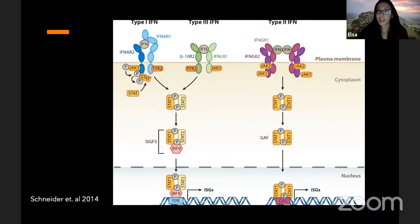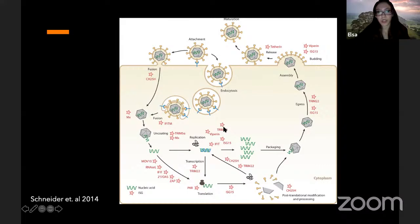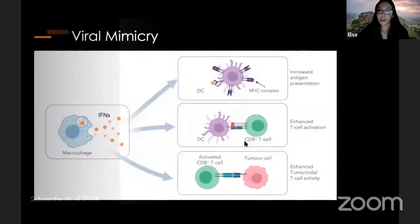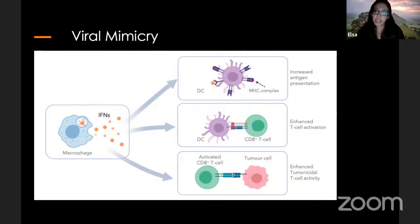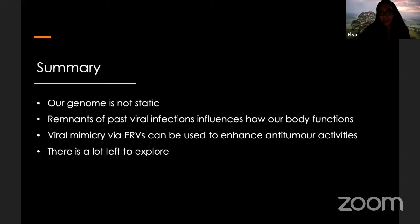ISGs are highly specialized to target viral infection at every stage — penetration, uncoating, maturation, endocytosis, and attachment. The red stars in the diagram indicate those ISGs which prevent each step from happening. These viral proteins are also able to ramp up our immune system, causing it to be better at recognizing cancerous cells and thereby promoting their destruction — an effect referred to as viral mimicry. Overall, the main points are that our genome is not static, remnants of past viral infections still influence the way our body functions, viral mimicry can be used to enhance anti-tumor activities, and frankly, there is a lot left to explore.